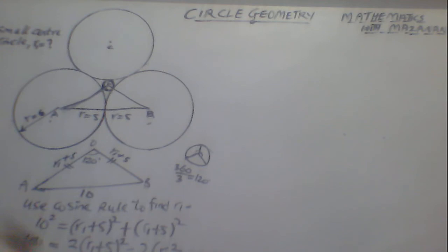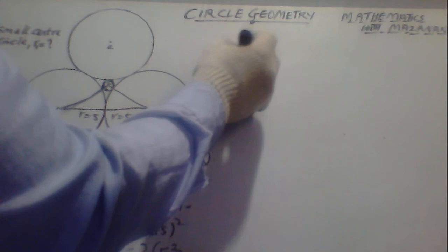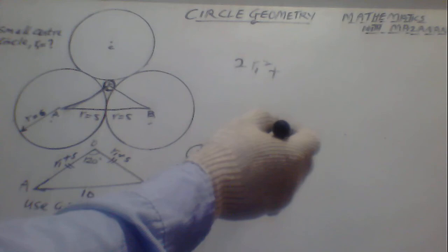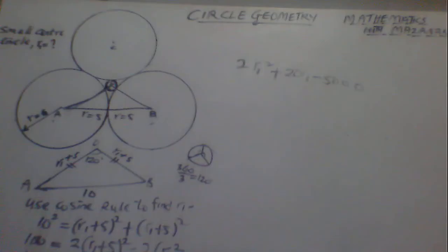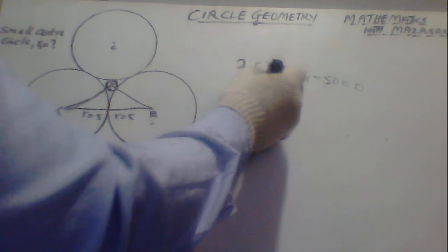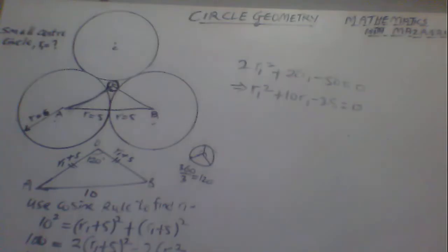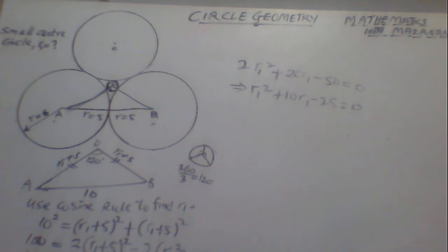Bringing the equation together: 2r1² + 20r1 − 50 = 0. We can simplify by dividing through by 2, which gives r1² + 10r1 − 25 = 0. This forms a quadratic equation in r1. We can use the general quadratic formula to solve it.